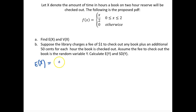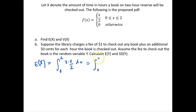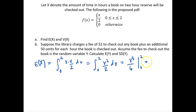The expectation of x is simply the integral of our PDF over the sample space, from 0 to 2, where we multiply x times the PDF. This gives the integral from 0 to 2 of x²/2 dx. Integrating, we get x³/6 evaluated from 0 to 2, which equals 8/6 minus 0.